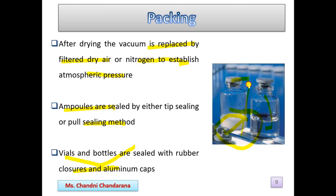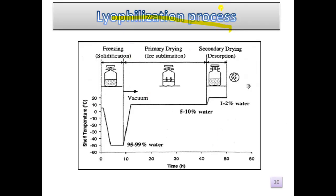A diagram of the lyophilization process shows shelf temperature in degrees centigrade versus time in hours. It illustrates the four stages: freezing, primary drying (vacuum applied, sublimation), secondary drying (desorption), and the resulting percentage of water remaining after the process.